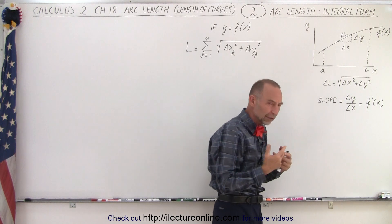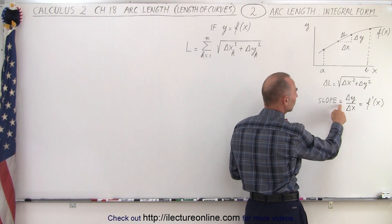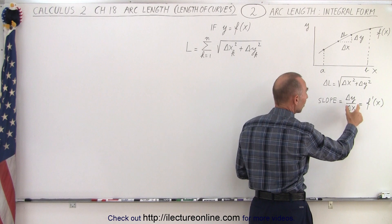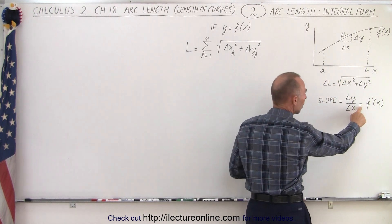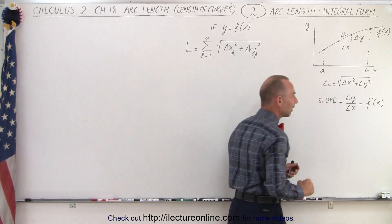We also are going to need to realize that the slope of a line is equal to the change in y over the change in x for any small section. If you make it a really small section it's good for that section so we can call that the derivative of that function.